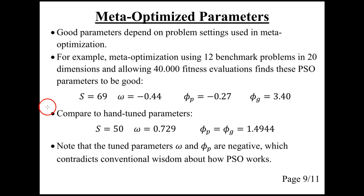Compare these to hand-tuned parameters, which are found by researchers using trial and error and took a long time to find. The swarm size is almost the same, but it was believed that the parameters should be positive, and meta-optimization found that it was actually far better to have negative parameters for omega and phi p and a larger parameter for phi g.